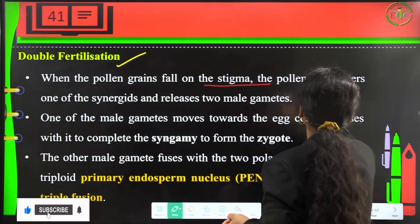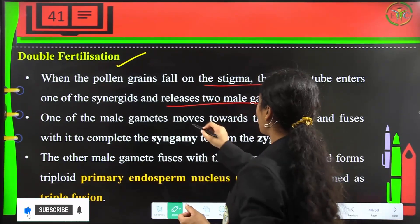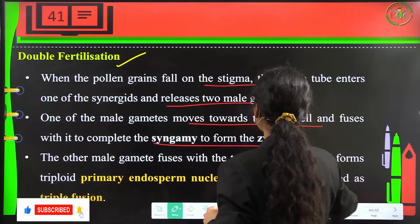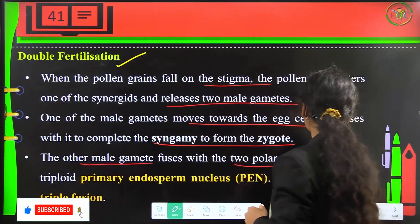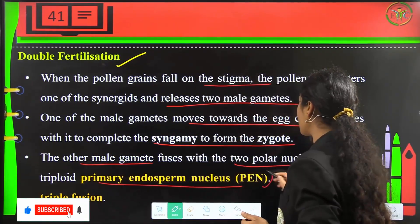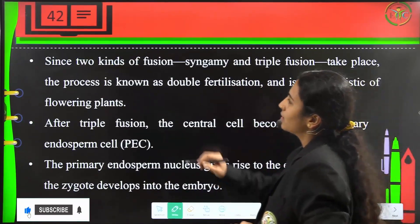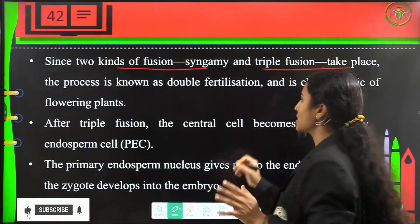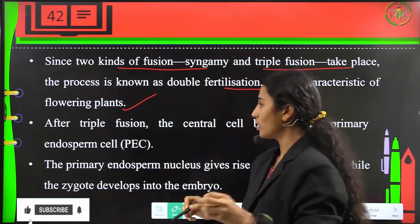In double fertilization, when pollen grains fall on the stigma, the pollen tube enters one synergid and releases two male gametes. One male gamete fuses with the egg cell to complete syngamy and form the zygote. The other male gamete fuses with the two polar nuclei to form the triploid primary endosperm nucleus (PEN), termed triple fusion. Since both syngamy and triple fusion take place, this is called double fertilization, a characteristic of all flowering plants.